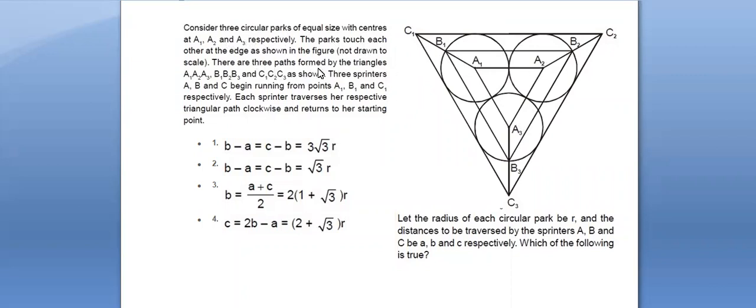A, B, C are runners; they start running from A1, B1, and C1. The lengths of distances traveled are a, b, and c - basically the perimeters of the three triangles. The perimeter of the inner triangle is a, middle triangle is b, and outer triangle is c. You have to figure out the relation between a, b, and c from the answer choices given.